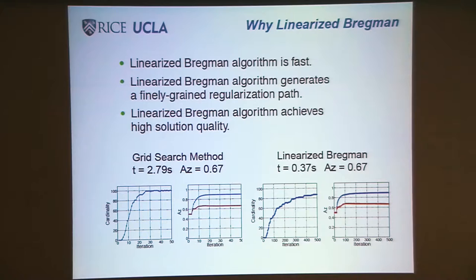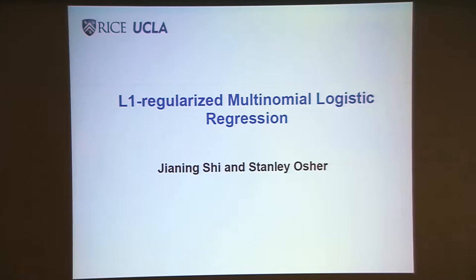Why linearized Bregman? It's fast. It generates a finely grained regularization path. You can get there in one iteration exactly. We get similar results with like one-seventh of time in this particular example. If the problem gets bigger, we'll beat it by more. We have discussion about multinomial logistic regression with no results. The idea looks similar. You wind up solving for a vector W, a vector of vectors. The algorithm when we do it will be simple.